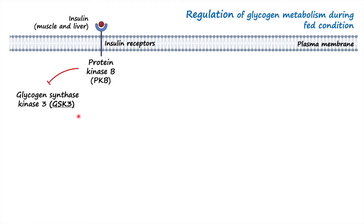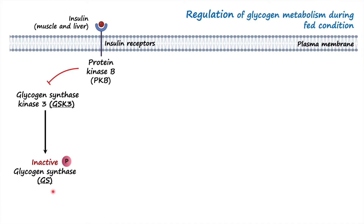Once protein kinase B is activated, it inhibits another enzyme called glycogen synthase kinase 3 (GSK3), which is a very important regulator of glycogen metabolism. When GSK3 is active, it phosphorylates and inactivates glycogen synthase, thereby inhibiting glycogenesis. PKB inhibits GSK3 by phosphorylating it; when GSK3 is phosphorylated it is inactive and cannot phosphorylate glycogen synthase, resulting in upregulation of glycogenesis.